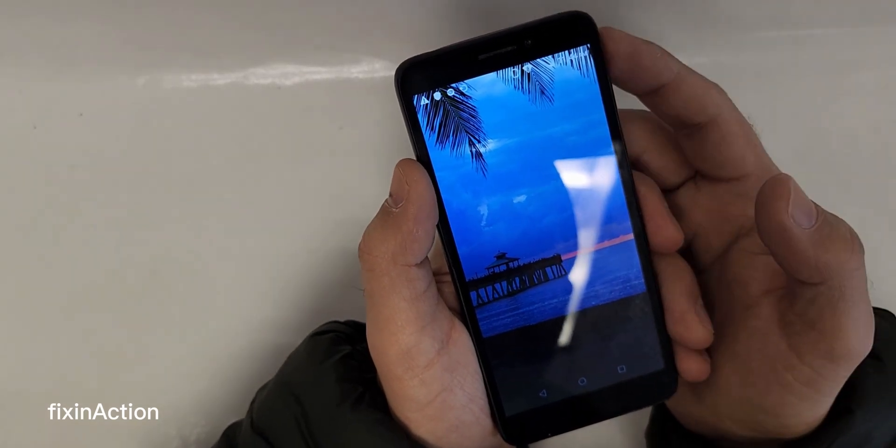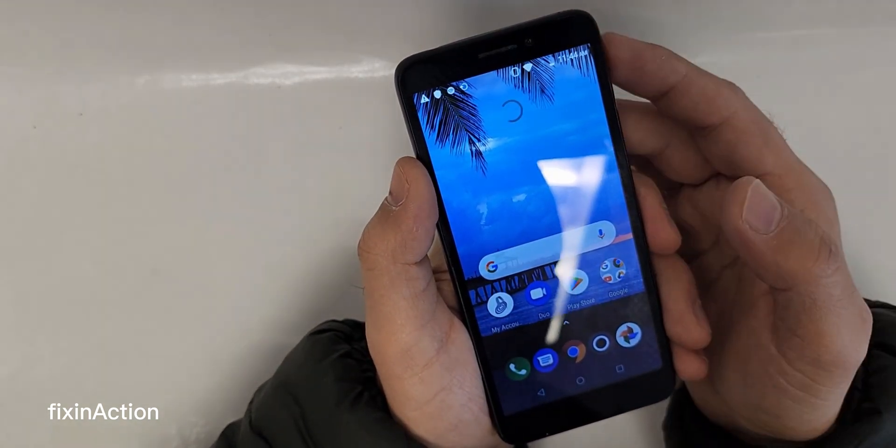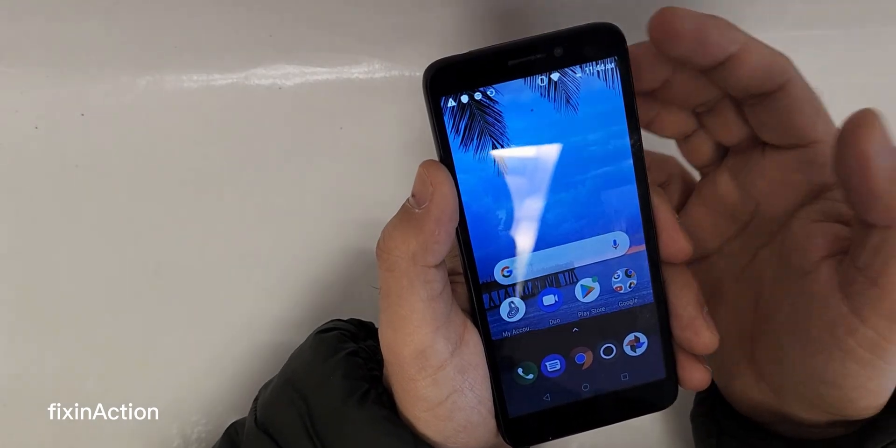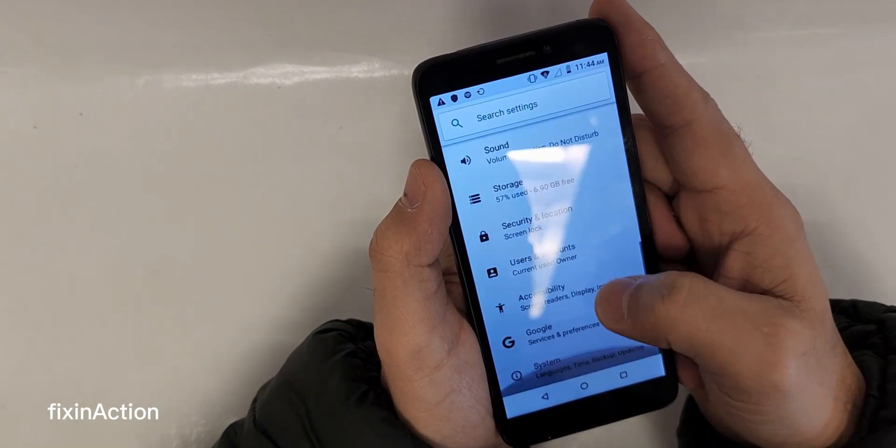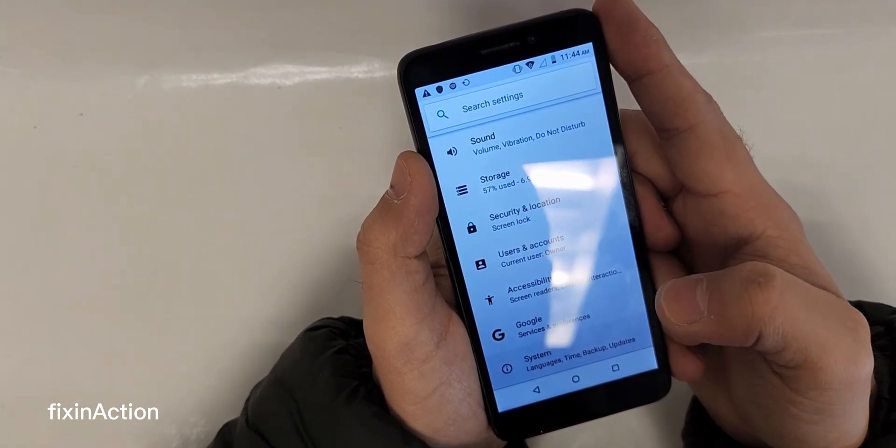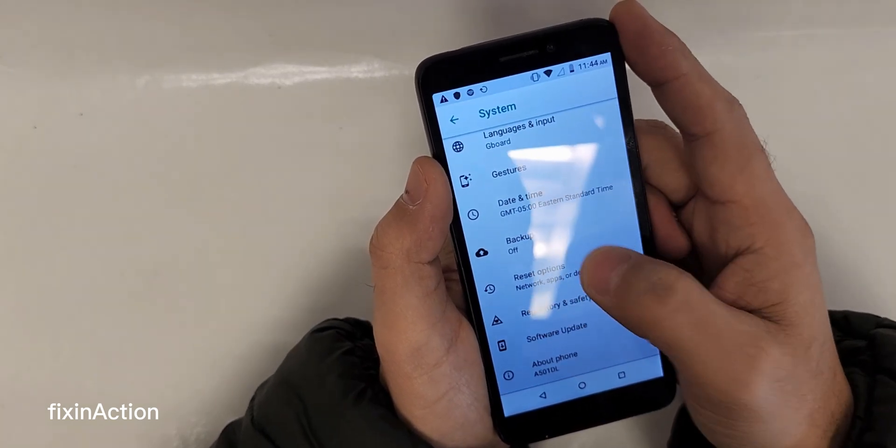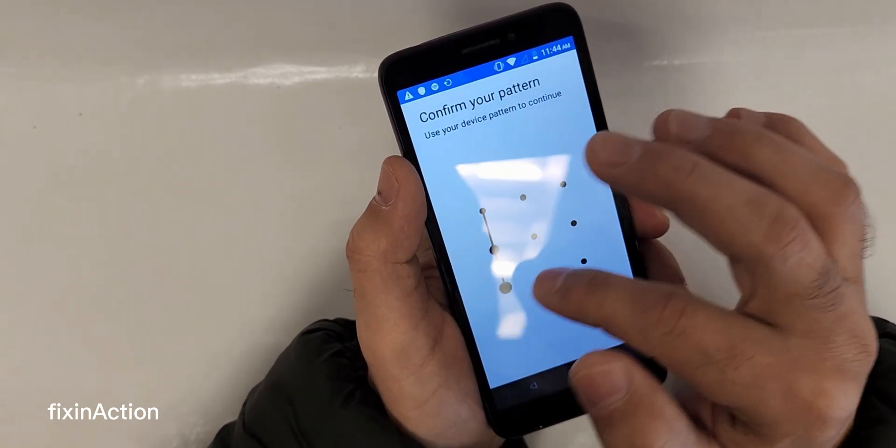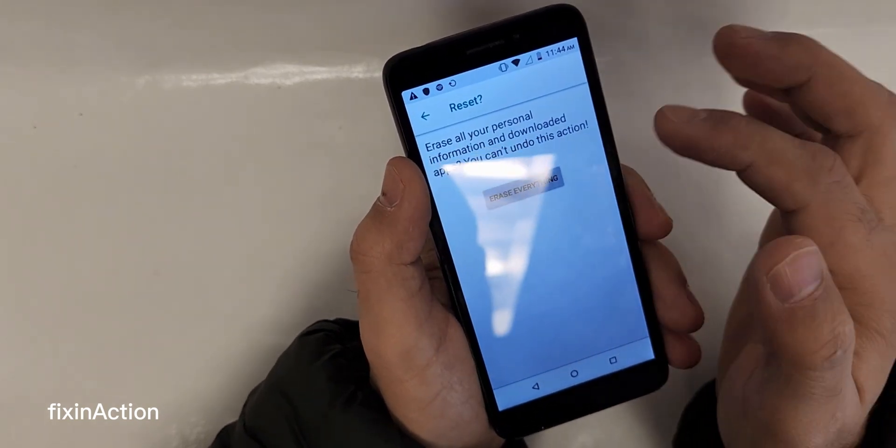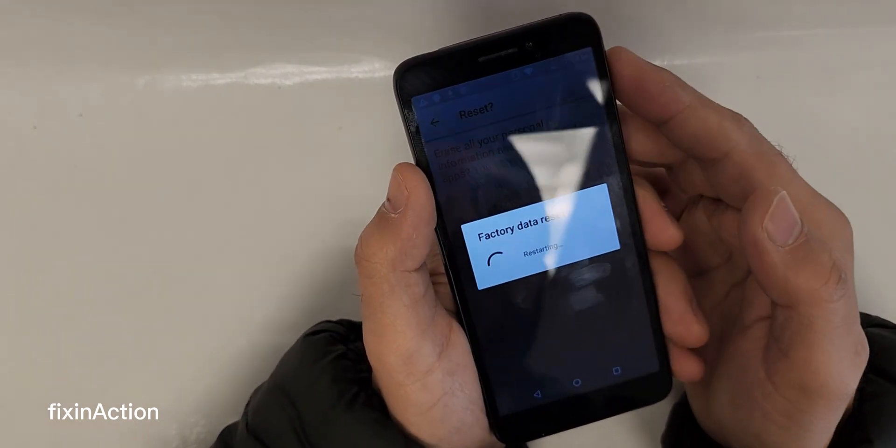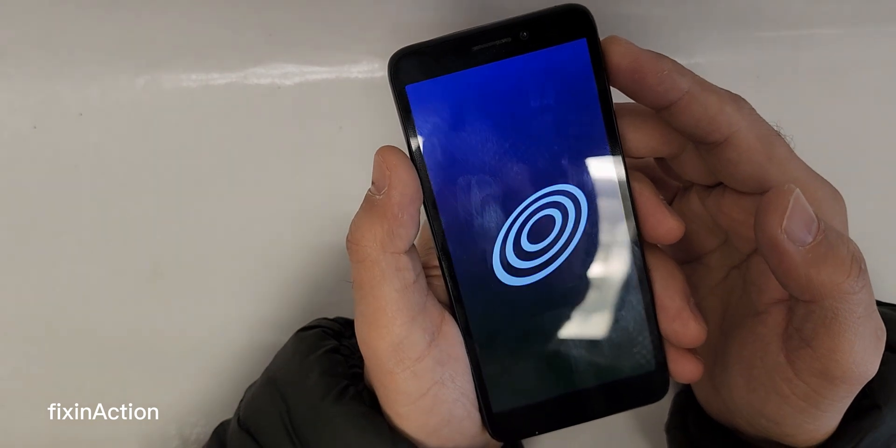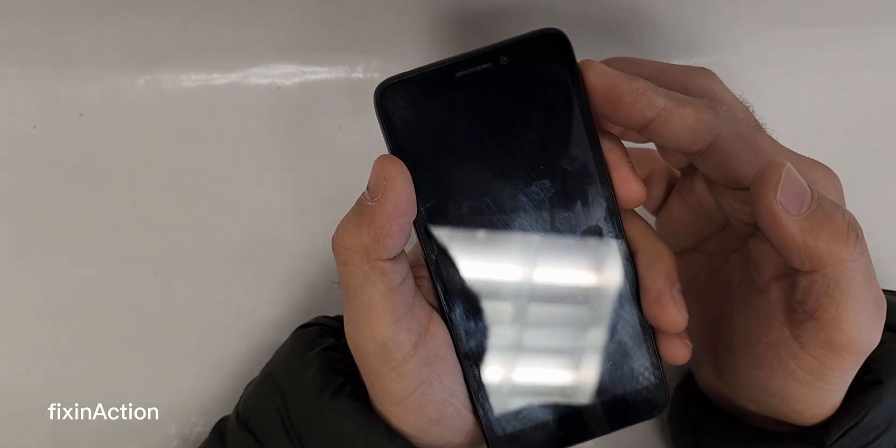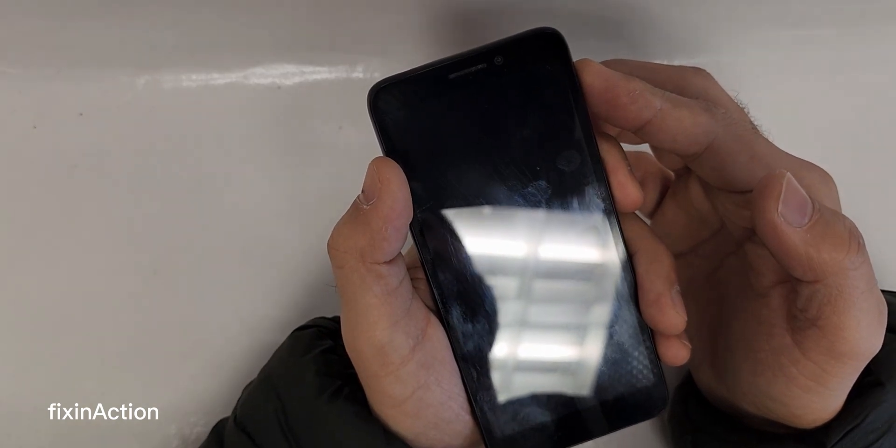As you can see, we have successfully bypassed the Google account. You are back to the device. Now if you want, you can hard reset the device. Go to Settings, come here to System, Reset Option, and Erase All Data Factory Data Reset. It will completely reset your device and your phone will be like a new device again. Thank you guys again for watching. Please don't forget to like, share and subscribe for more videos.